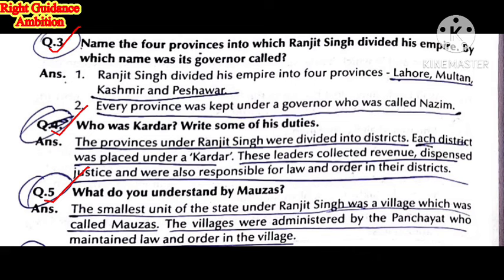The provinces were further divided into districts. The head of each district was called a Kardar. These Kardars collected revenue, dispensed justice, and were also responsible for law and order in their district — so their main work was tax collection and maintaining law and order properly in that area.